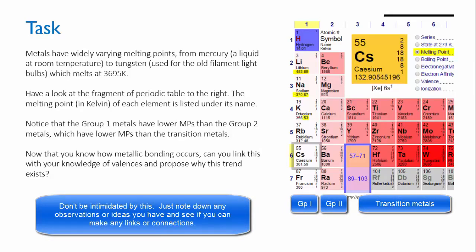You'll notice that the group 1 metals have lower melting points than the corresponding group 2 metals, and the group 2 metals have lower melting points than the transition metals.